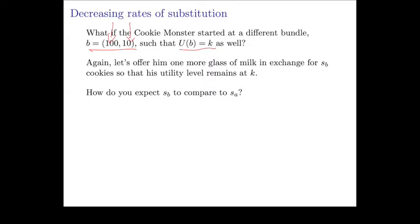How many cookies are you willing to give up that keeps your utility level exactly the same at K? How do we expect SA to compare to SB? In the first case he was starting from 10 glasses of milk and already had 100 cookies, but now he's got 100 glasses of milk and only has 10 cookies. Most likely SB is going to be a lot smaller than SA.